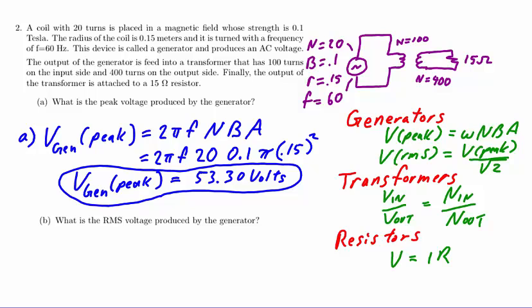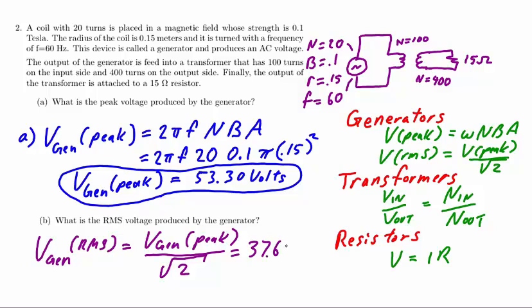We're asked for the RMS voltage produced by the generator, and we always remember that RMS voltages are smaller than peak voltages, and therefore we'll need to take our peak result and divide it by the square root of 2. This gives us the numerical value of 37.68 volts.